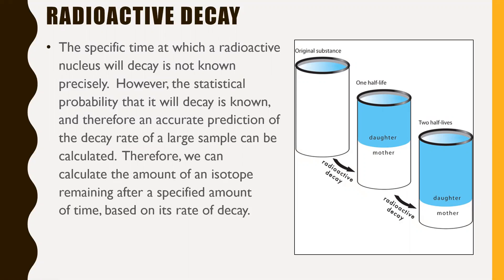Therefore, an accurate prediction of the decay rate of a large sample can be calculated. We can calculate the amount of an isotope remaining after a specific amount of time based on its rate of decay. Even though we don't know exactly when each nucleus will decay, we can still predict overall what the entire sample will look like after a given amount of time.